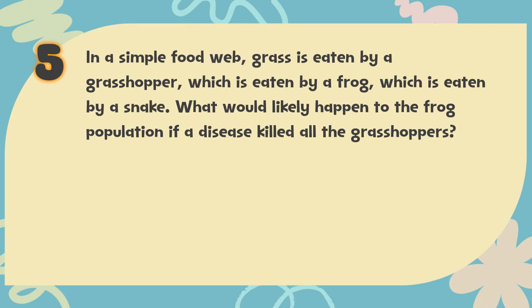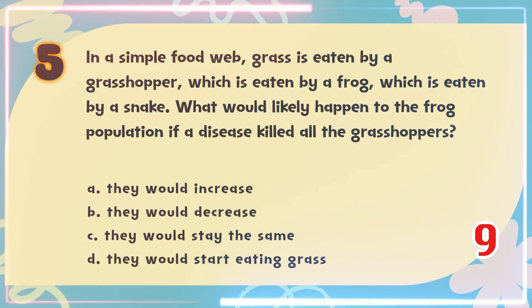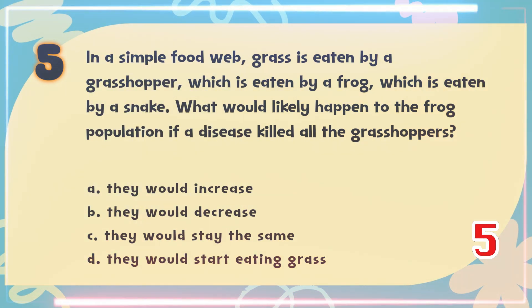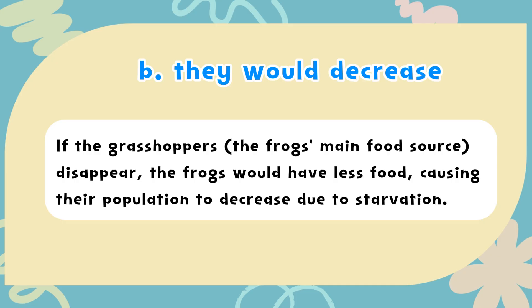Number 5. In a simple food web, grass is eaten by a grasshopper, which is eaten by a frog, which is eaten by a snake. What would likely happen to the frog population if a disease killed all the grasshoppers? The choices are: A. They would increase, B. They would decrease, C. They would stay the same, D. They would start eating grass. The correct answer is B. They would decrease. If the grasshoppers — the frog's main food source — disappear, the frogs would have less food, causing their population to decrease due to starvation.